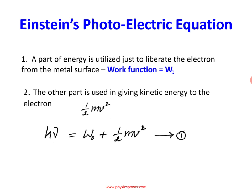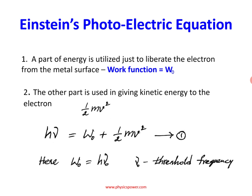The photon energy — the minimum energy required to liberate the electron from the metal surface — is the work function. W equals h times ν₀, where ν₀ is the threshold frequency, the minimum frequency of radiation incident on the metal surface.